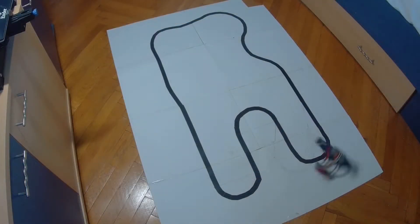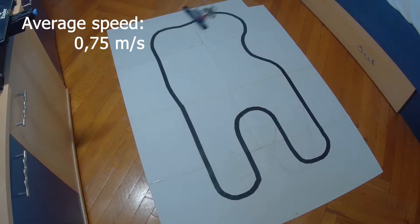As for another track with more curves, which has a distance of 322 centimeters, the robot will run at 0.75 meters per second.